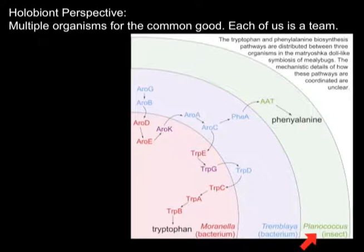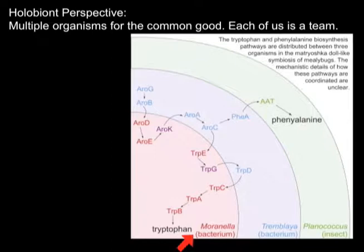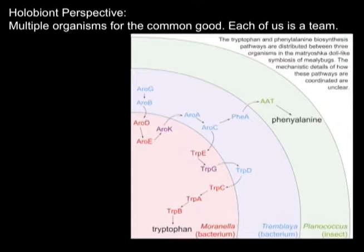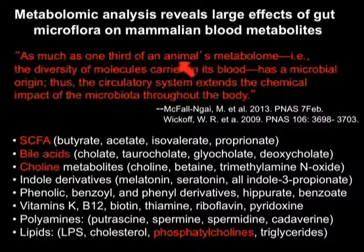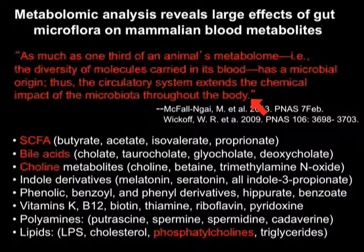Here is the pathway for phenylalanine in Planococcus. Here's Tremblia, which is a symbiont of Planococcus. And here's provisionally named Morinella, a bacterium which is a symbiont of the symbiont. The pathway to make phenylalanine begins in the symbiont, goes into the symbiont's symbiont, back into the symbiont, then into the host to make phenylalanine. So phenylalanine is a product of three organisms. As much as one-third of an animal's metabolome — the diversity of molecules carried in its blood — has a microbial origin. Thus the circulatory system extends the chemical impact of the microbiota throughout the body.